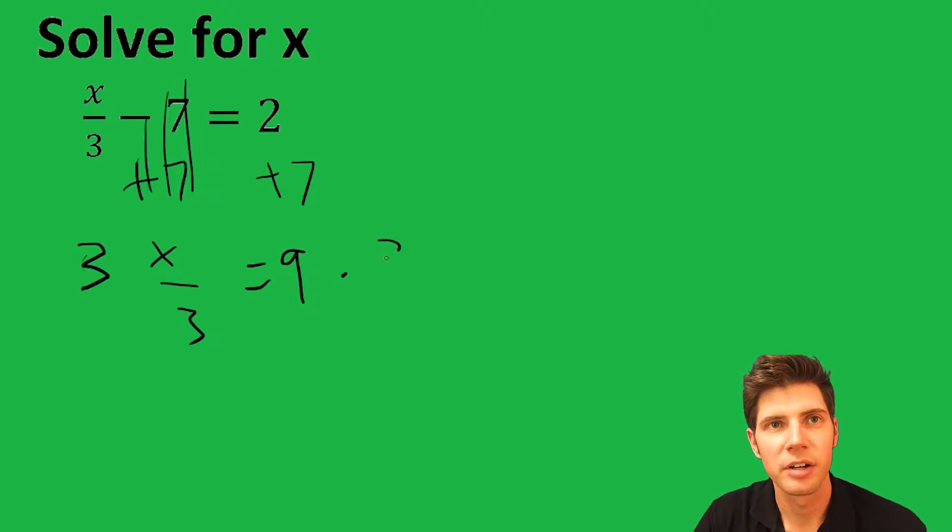So we're going to put a 3 there, and a 3 here, and we're multiplying. So on the left-hand side, the 3s cancel, and we're left with just an x, which is what we were trying to do.